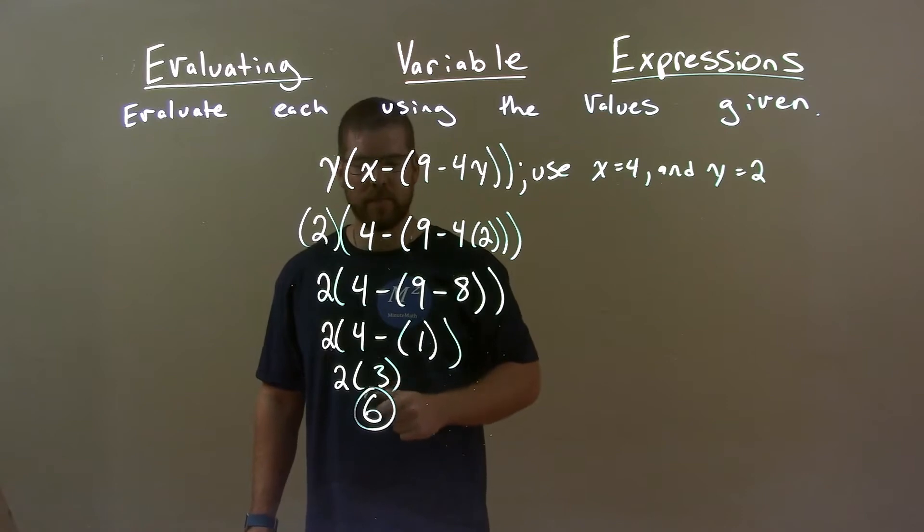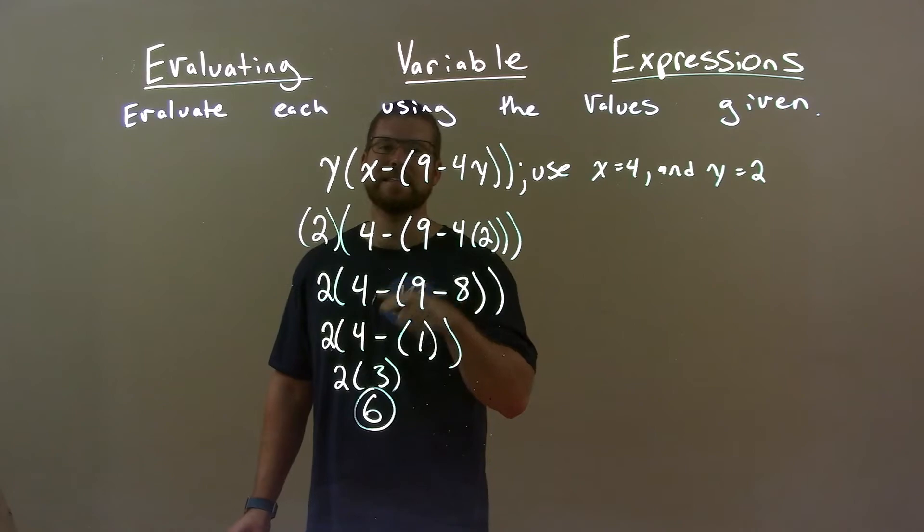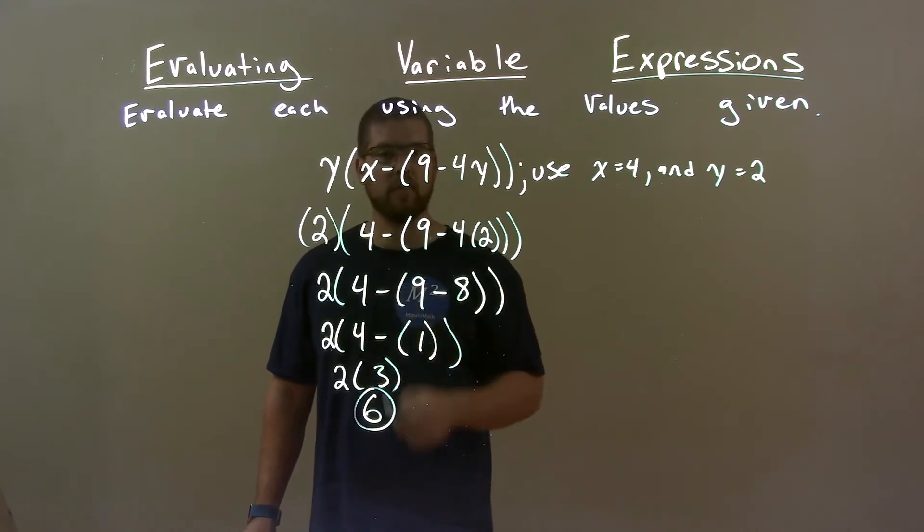Then 9 minus 8, which is 1. 4 minus 1 is 3. Then lastly, on the outside, 2 times 3 is 6. And again, 6 is our final answer.